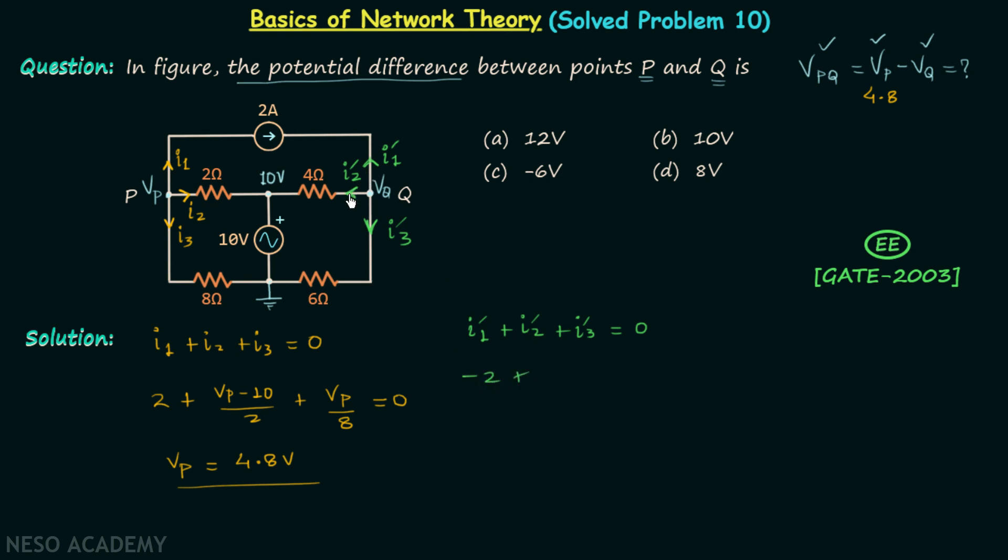I2 prime is equal to VQ minus 10 divided by 4, and I3 prime is equal to VQ minus 0 divided by 6, so we have VQ divided by 6. When you simplify this you will find VQ is equal to 10.8 volts. So we have calculated VQ as well, 10.8 volts.